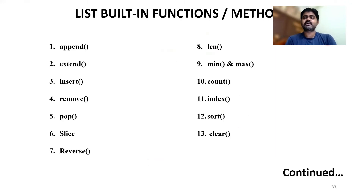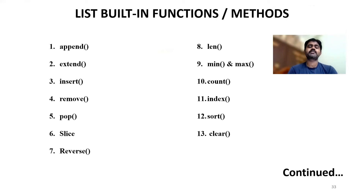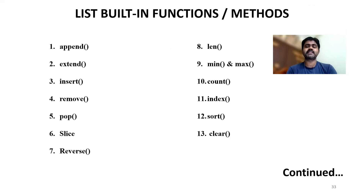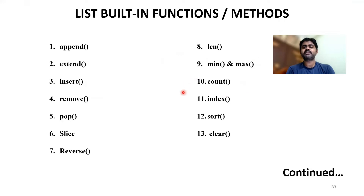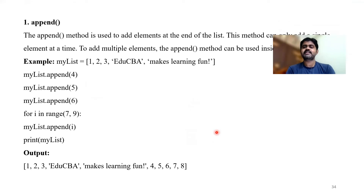Here comes our most important concept: list built-in functions or methods. In total we have 13 built-in functions or methods inside a list. The first one is append, second is extend, insert, remove, pop, slice, reverse, length, minimum and maximum, count, index, sort, and clear. We'll discuss each one.